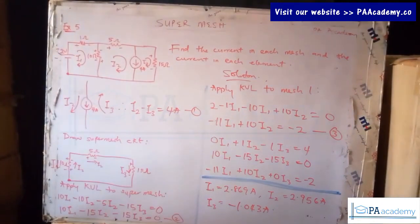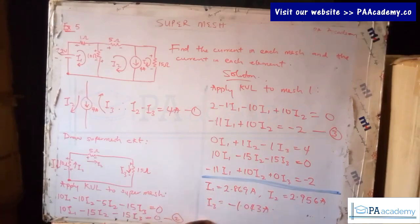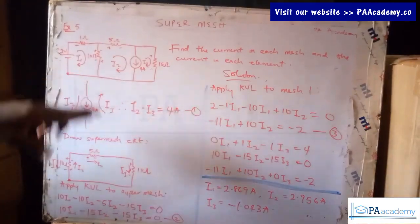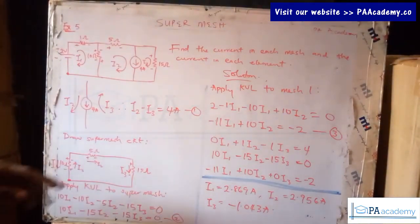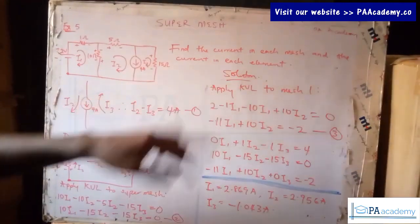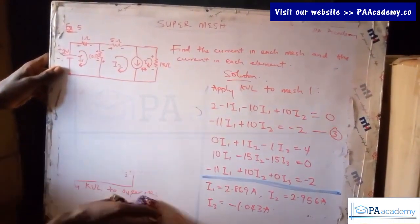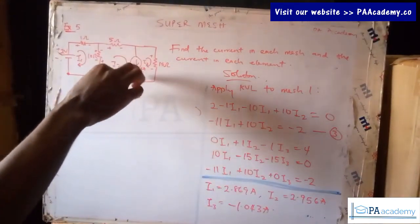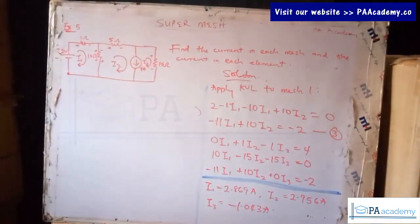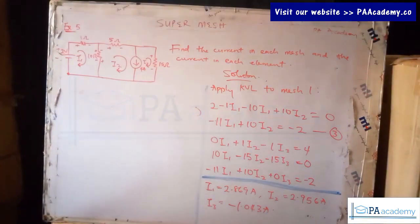The calculator gives: i1 = 2.869 A, i2 = 2.956 A, and i3 = −1.043 A. This answers the first part of the question — the current in each mesh. Note that i3 is negative, meaning the actual direction for mesh 3 is anti-clockwise, opposite to the clockwise direction we assumed.